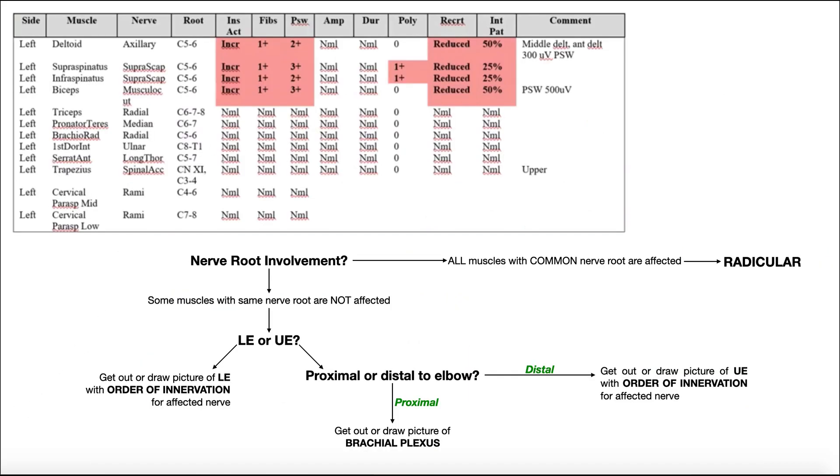So hopefully this video gave you some good understanding about how to interpret an EMG when you think it's a brachial plexus problem. In the next video, we'll do one where this damage appears to be distal to the elbow, and we won't specifically use the brachial plexus, we'll actually do what's called order of innervation. So make sure to join us then.